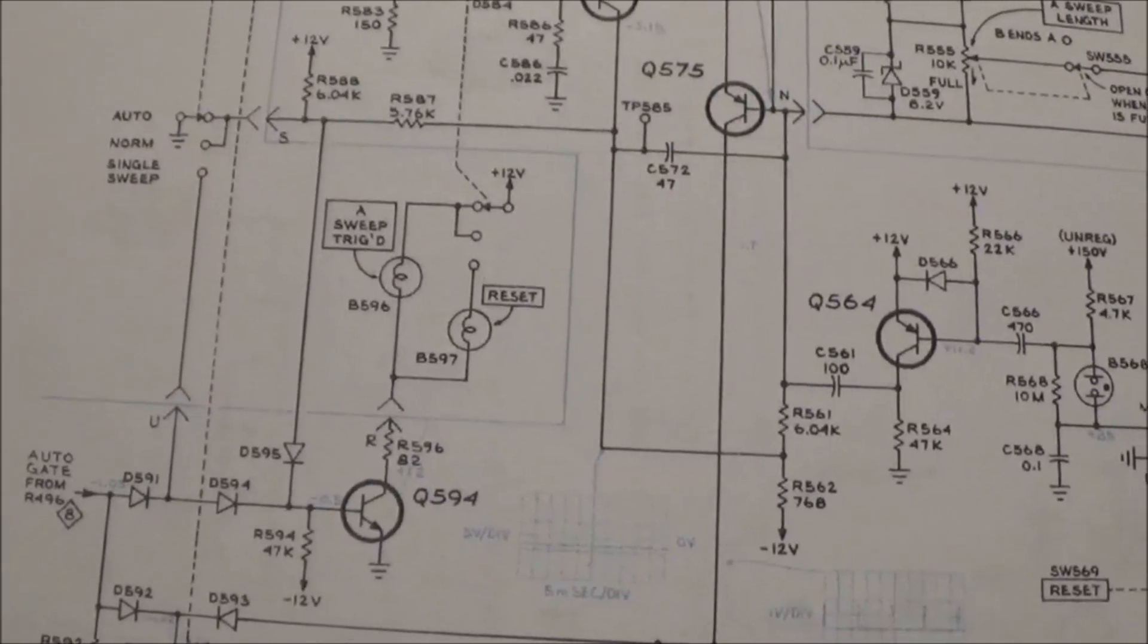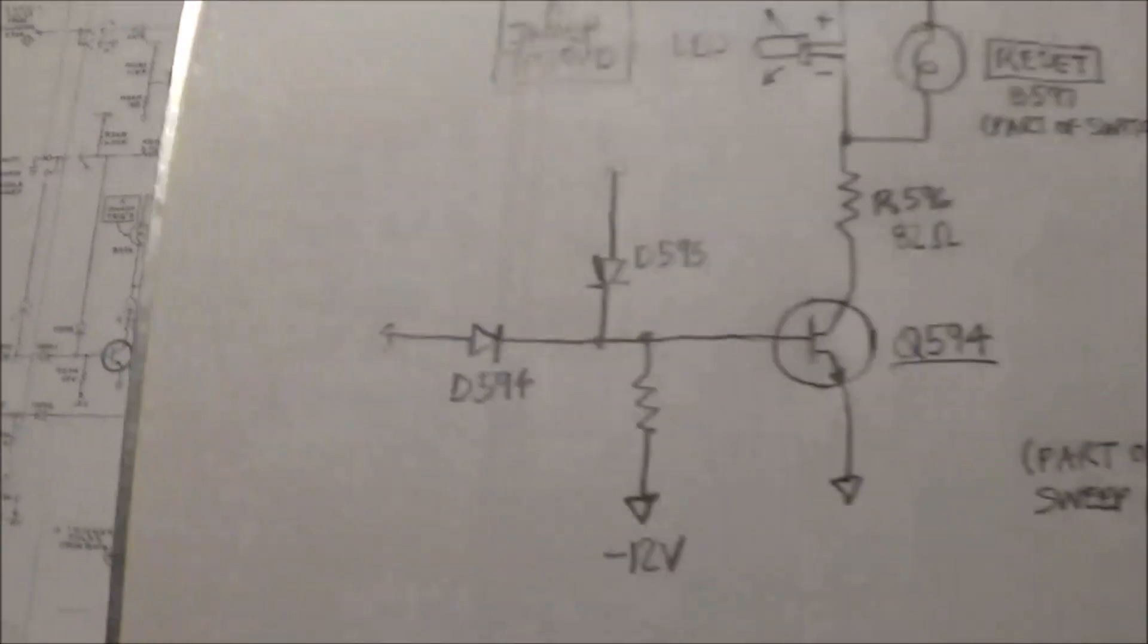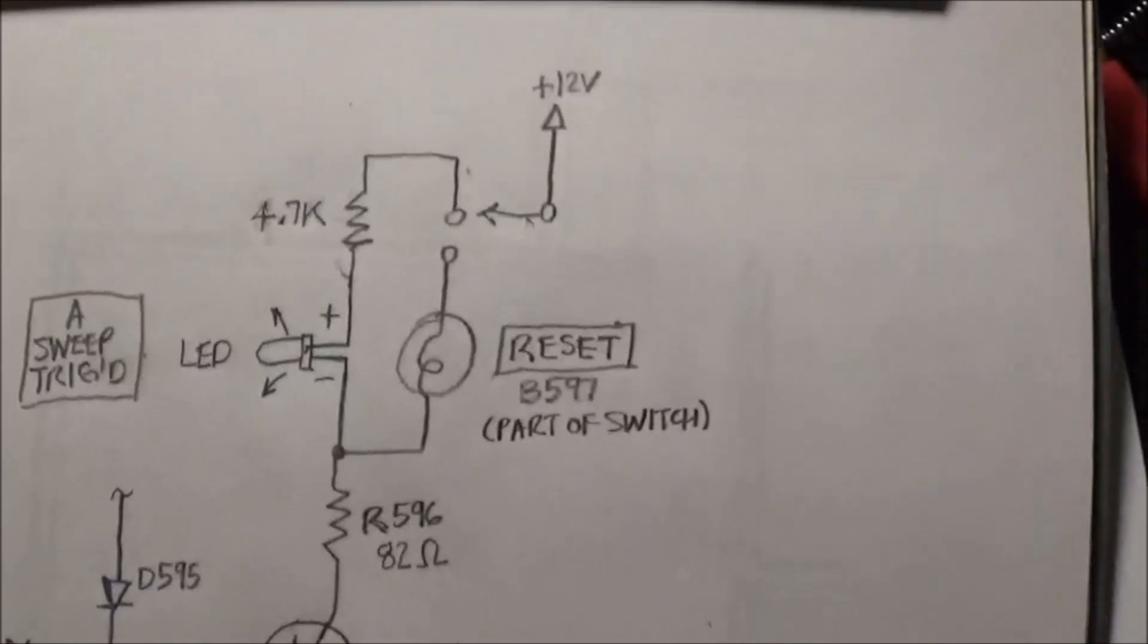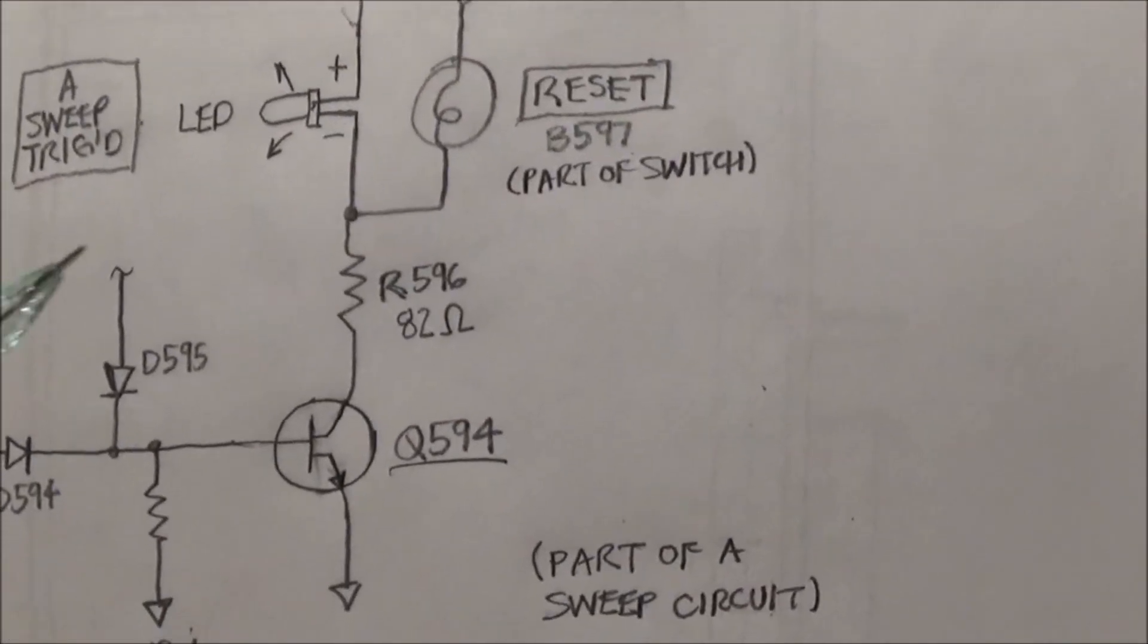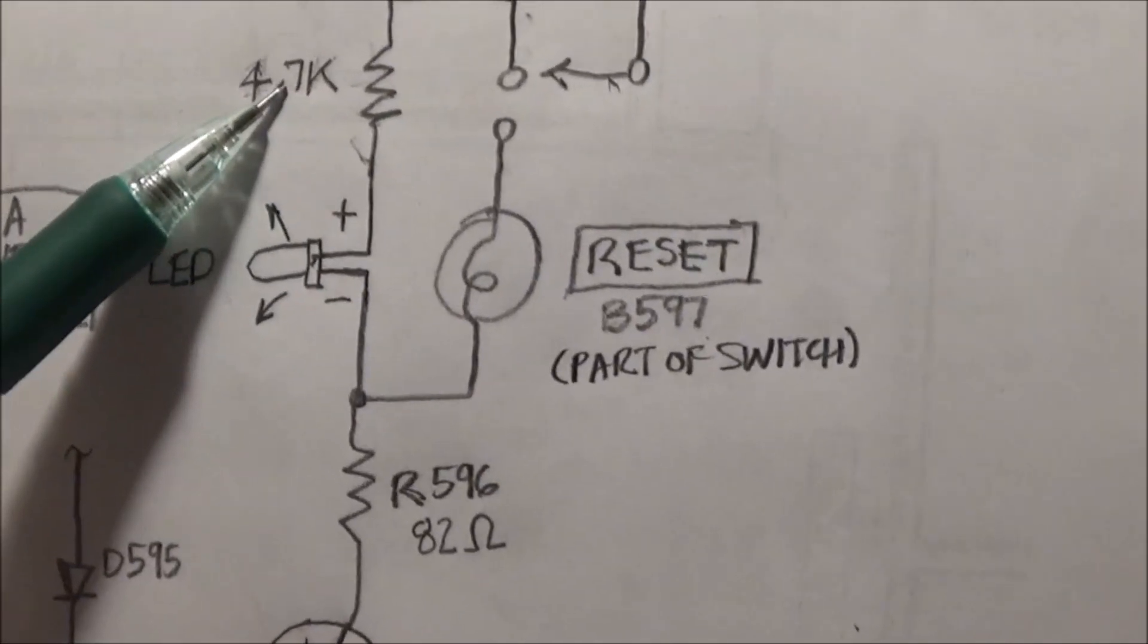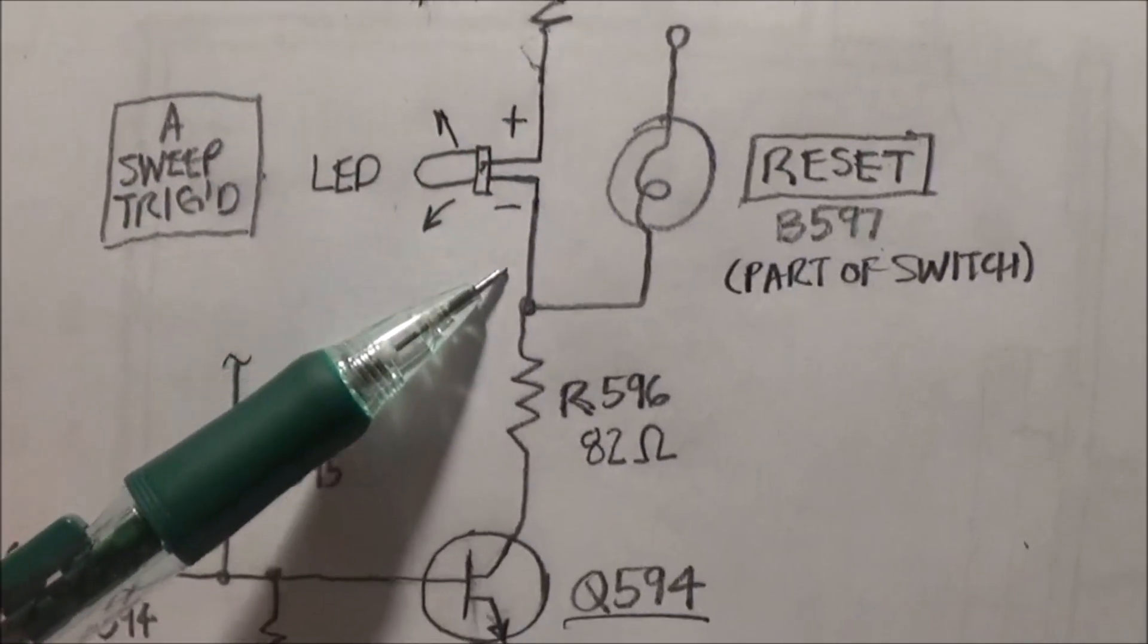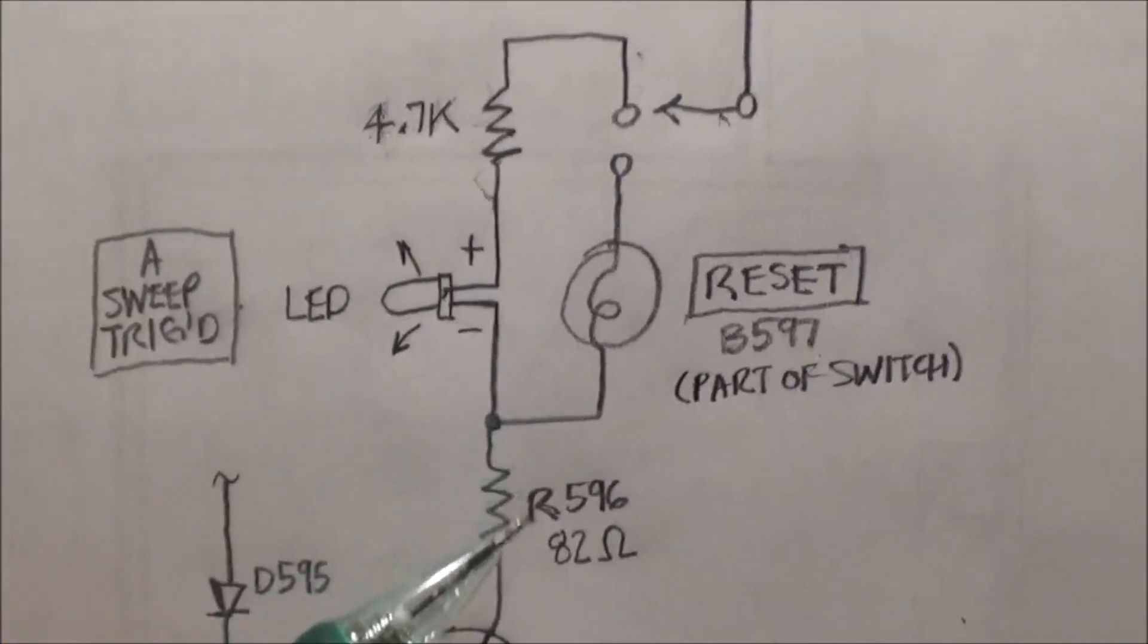So to convert this little indicator lamp from an incandescent bulb to an LED, it's actually pretty simple. What I've done here is basically replaced the incandescent bulb with an LED and put a little 4.7k current limiting resistor here so the thing doesn't burn out, because it's going to be getting 12 volts DC.